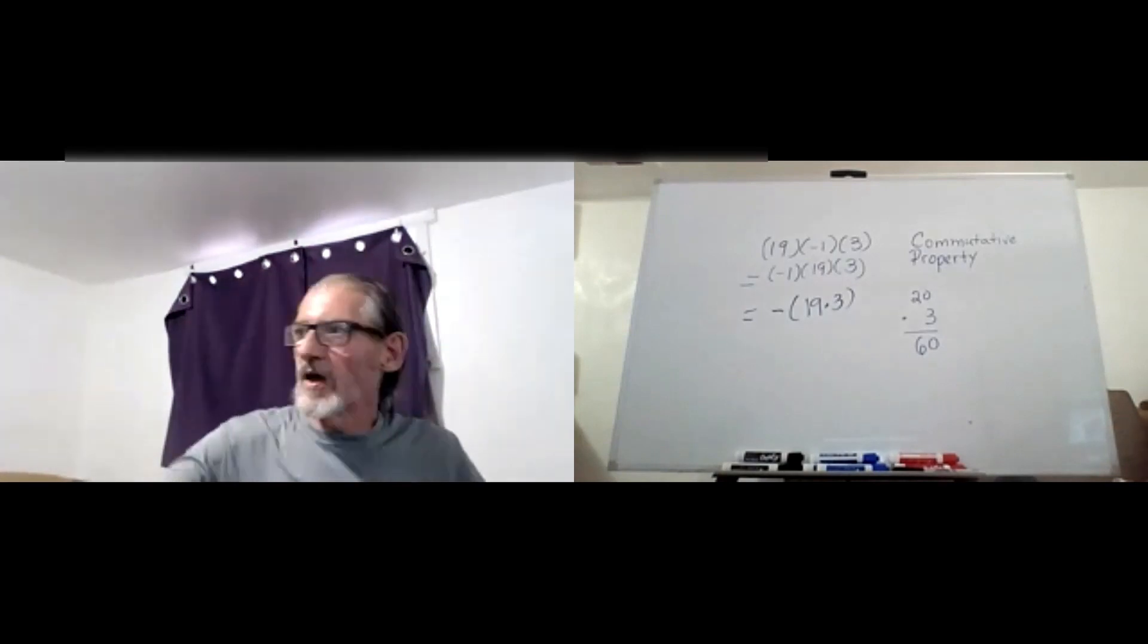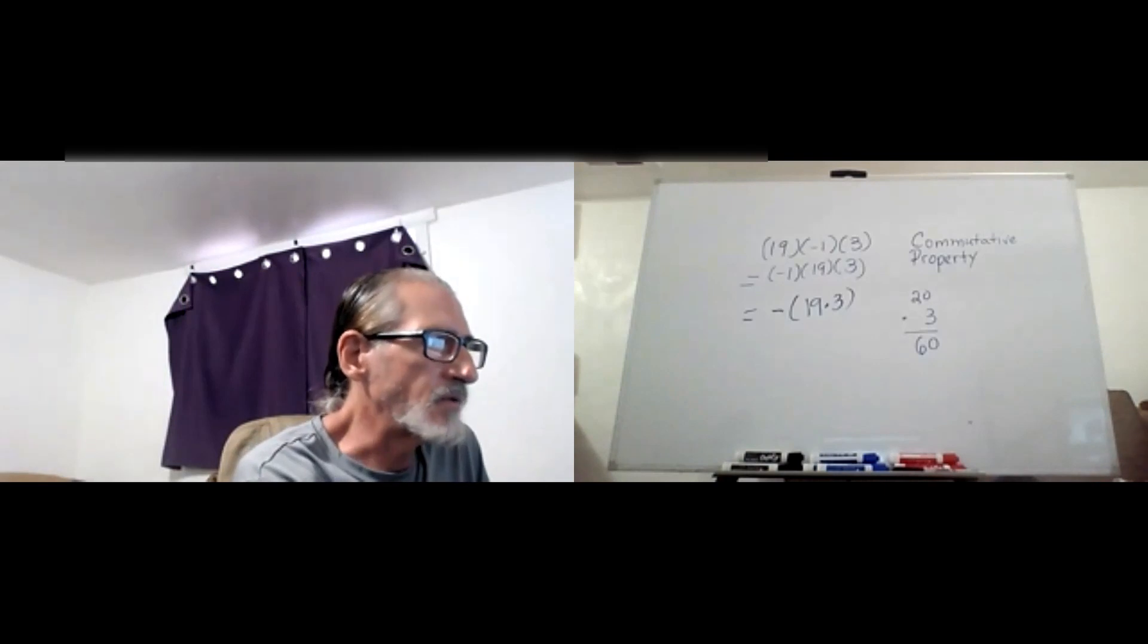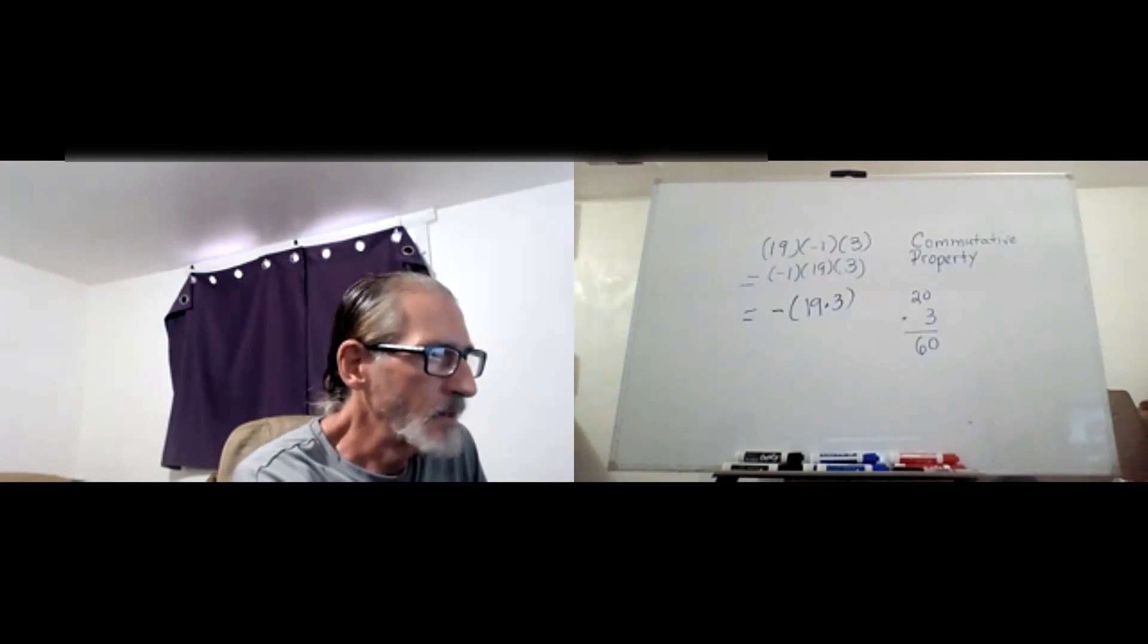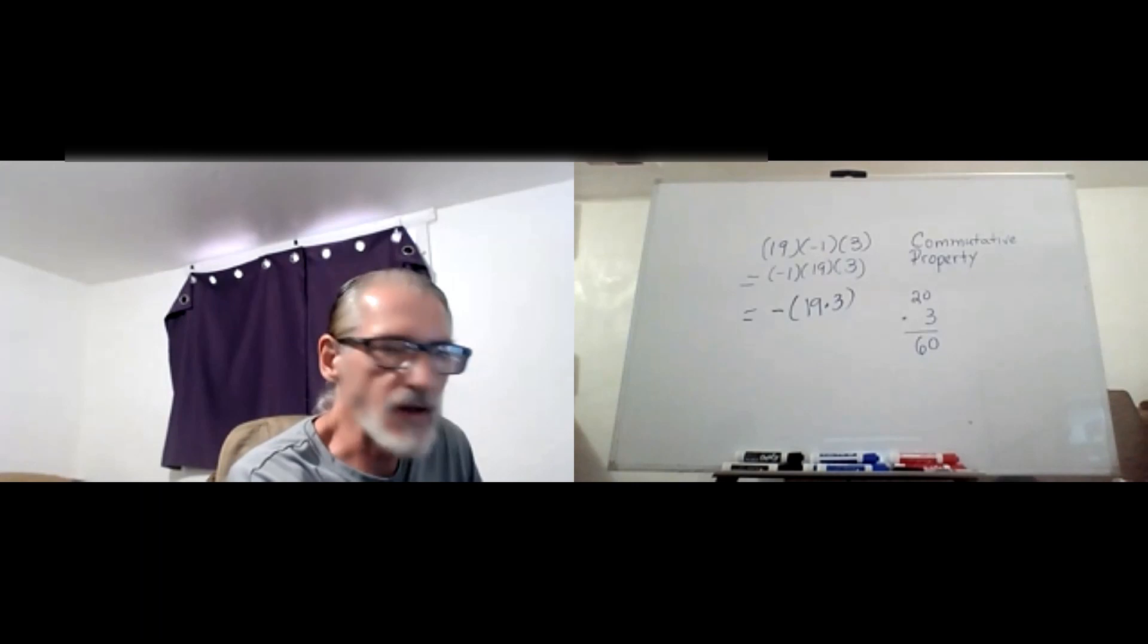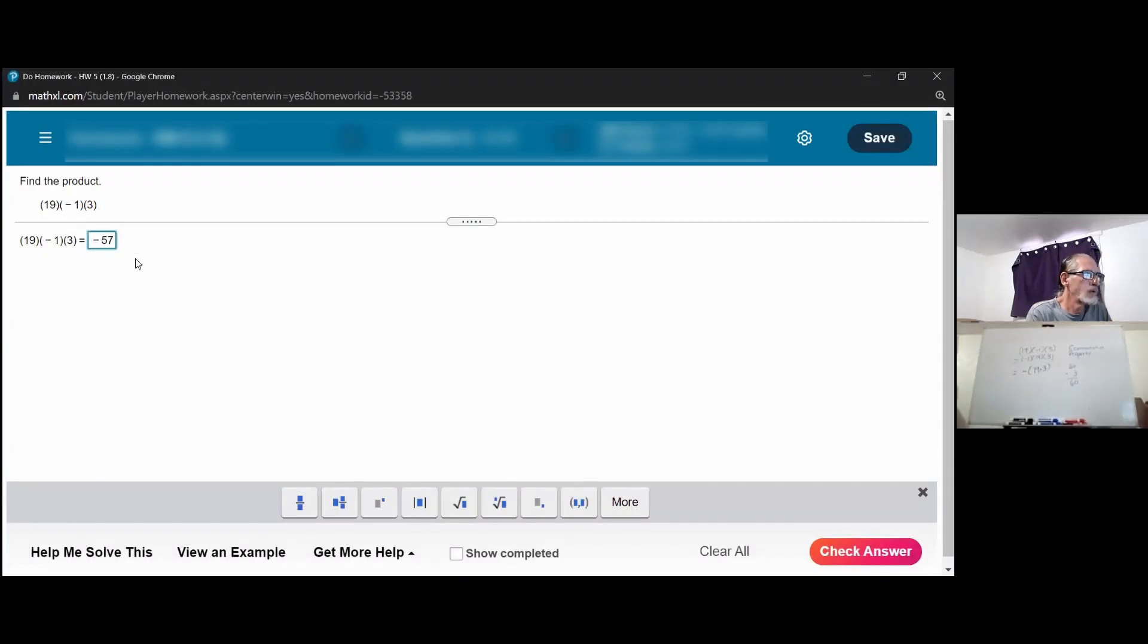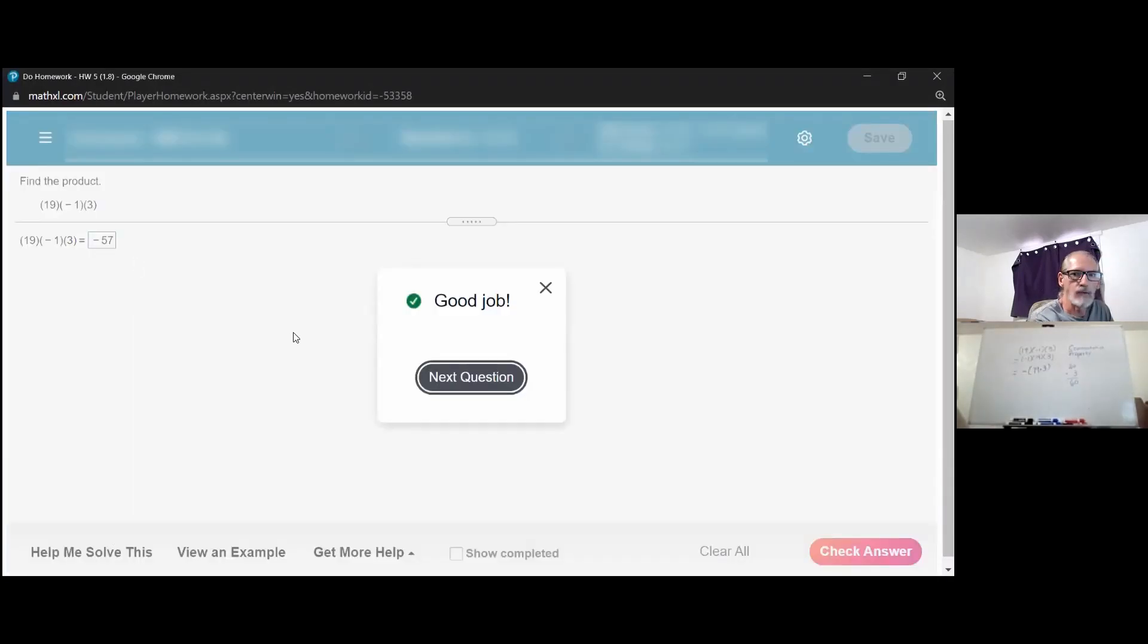You notice that off to the side I have 20 times 3 is 60. Since we're multiplying by 1 less than 20, our answer should be 1 less: 57. But we've already figured out that this answer is negative, so let's put in negative 57. And there we go. Thank you.